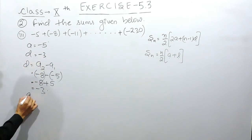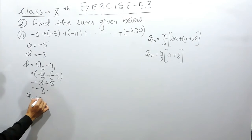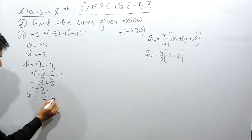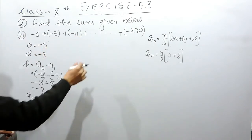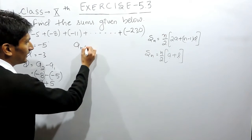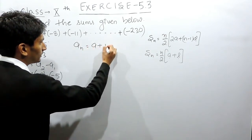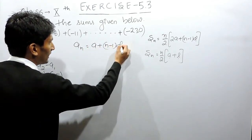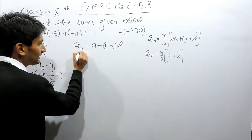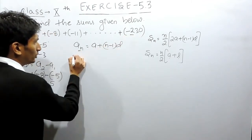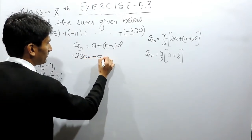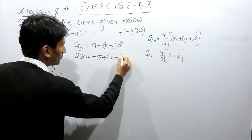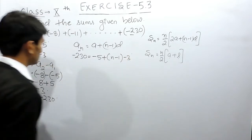And the last term is given to you as -230. First of all, you have to find how many terms are there in this AP where the last term is given. To find out the last term we have this formula. In this case, the last term is -230, the first term is -5, the number of terms you have to find, and the common difference is -3. Now let's solve this equation.